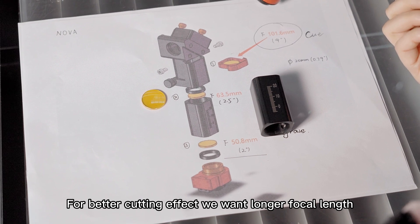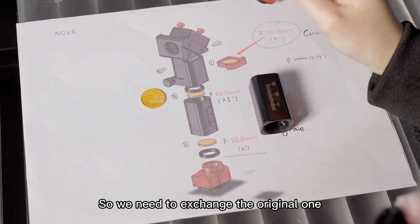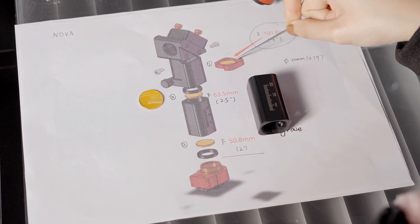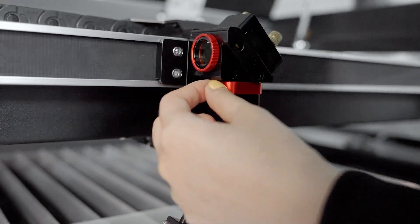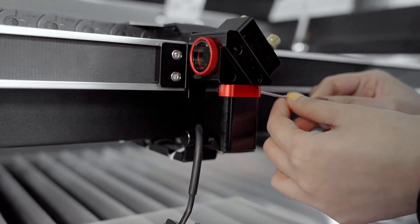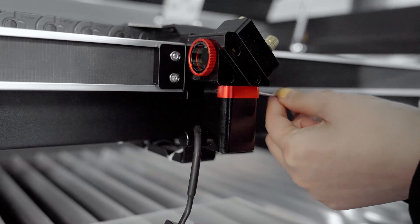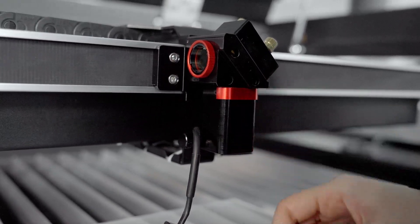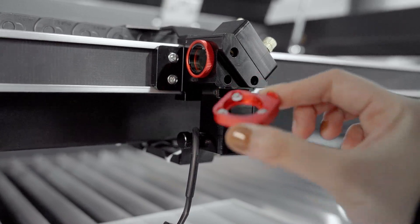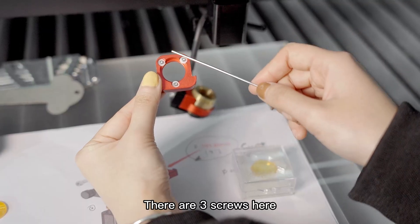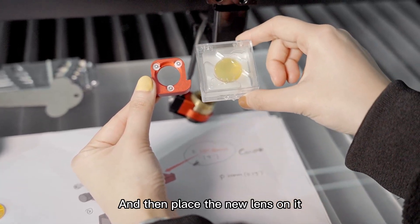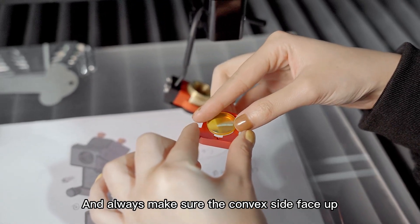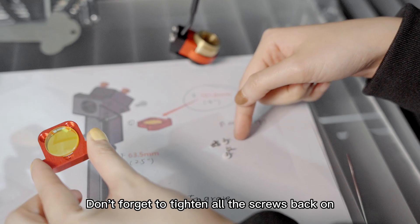For better cutting effect, we want longer focal length. So we need to exchange the original one for the upper one, which means we need to unscrew these two so that we can have this part. Now you have it. There are three screws here. Just remove all of them and then place the new lens on it, and always make sure the convex side face up. Don't forget to tighten all the screws back on.